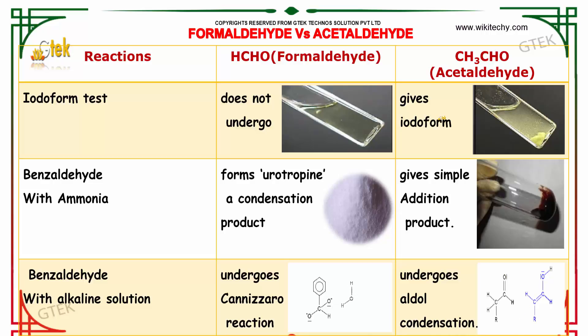When formaldehyde is made to react with benzaldehyde in the presence of ammonia, it forms urotropine, which is a condensation product, whereas acetaldehyde gives a simple addition product.